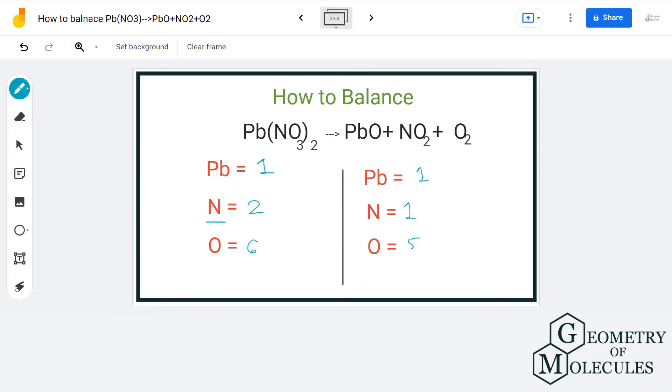We have two nitrogen atoms on the reactant side and only one on the product side. So let us multiply it by two. This in turn gives us seven oxygen atoms on the product side.